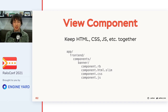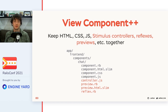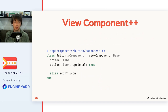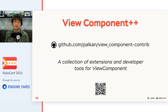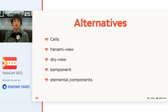Another cool feature of view components is that they allow you to keep all related stuff together. We can put not only Ruby logic and HTML representation into the same folder, but also styles and JavaScript. We can go further and put reflexes, Stimulus controllers, and previews in the same folder — which isn't possible out of the box, but we can extend ViewComponent to do that. We can also get rid of repeated initializers and add readers. I extracted all my extensions into a gem called view_component_contrib — feel free to check it. ViewComponent is also not the only library providing a view components approach to Rails; there are more libraries to check and try.